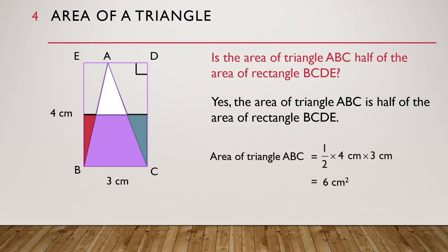So the area of triangle ABC is still equal to half times 4cm times 3cm, which is equal to 6cm².